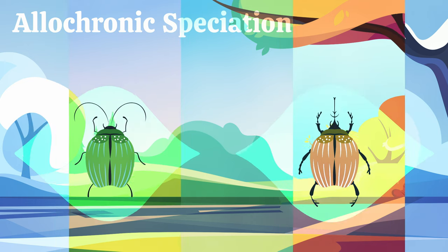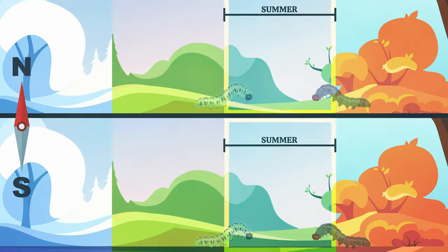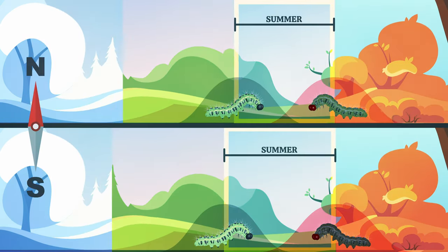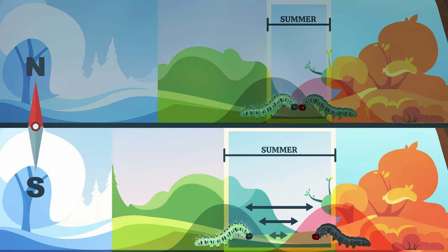We saw really clearly that the further north you go, the shorter the season, and actually the less divergence between our red and black morphs. As a result, we see this separation between the two populations because they've mated and produced offspring at different times of year.